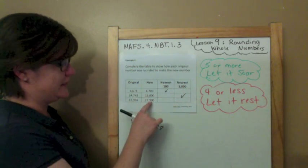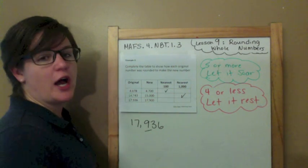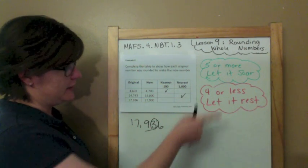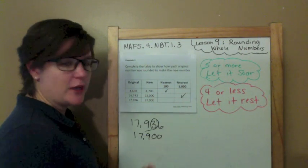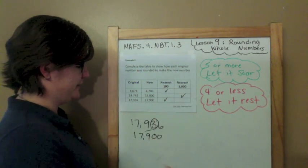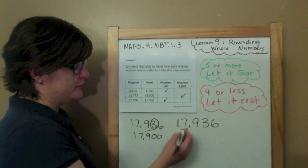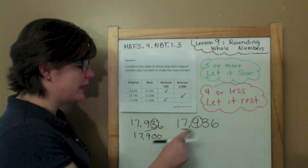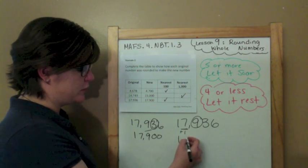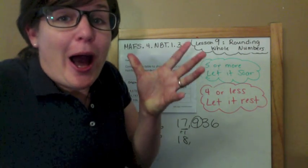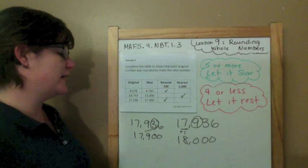17,936: I need to get to 17,900. Is it the nearest hundred or the nearest thousand? Rounding to the nearest hundreds — spotlight to the right, that's four or less, you better let it rest. Drop everything down and everything else becomes zeros. That's what I needed. Now let's try rounding to the nearest thousand — the seven is in the thousands place. Spotlight to the right — five or more, let it soar! Seven plus one is eight, and everything else becomes zeros. That's not what I wanted. I wanted 17,900, so it's my nearest hundred.